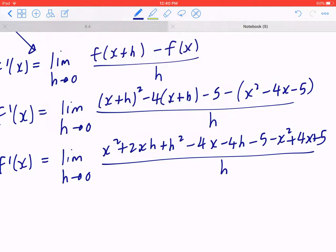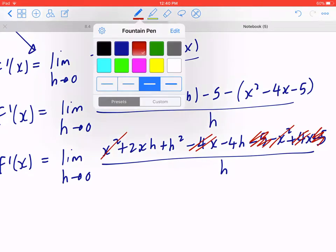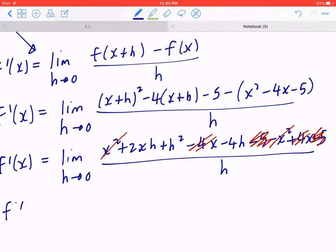When you collect like terms, x squared minus x squared, you can cross it out. Likewise, negative 4x, positive 4x, negative 5 and positive 5. When you think about the common factor in the numerator, you write down the limit as h is approaching 0, bring the h to the front. And inside the brackets, it's going to be 2 times x plus h minus 4.